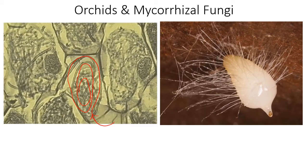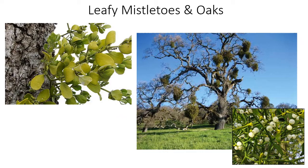Orchids are heterotrophic for the first part of their lives until they have enough energy to make those first leaves. Unlike other plants, they have no initial food stored in the seed, so they steal it from a fungus. Once the orchid is producing sugars on its own, the relationship becomes mutualistic — that fungus becomes the mycorrhizal partner and receives sugars from the adult orchid. If you're driving south or east of here, you might see oak trees with big bushy green parts but no other leaves — those are mistletoes.